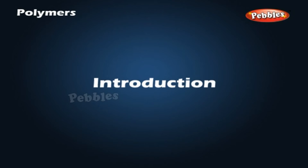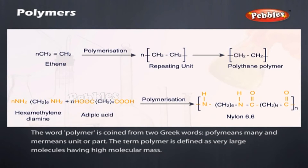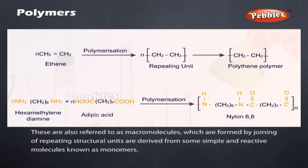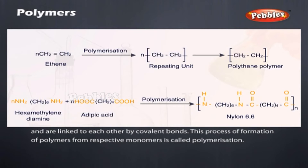Polymer. Introduction: The word polymer is coined from two Greek words — poly means many, and mer means unit or part. The term polymer is defined as very large molecules having high molecular mass. These are also referred to as macromolecules, which are formed by joining of repeating structural units derived from simple and reactive molecules known as monomers, and are linked to each other by covalent bonds.